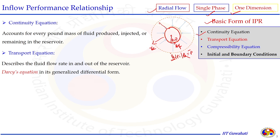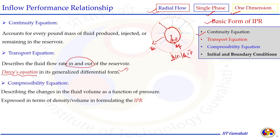The continuity equation is the mass conservation equation — we account for how much mass is going in, how much is going out, and how much remains within the control volume. Second is the transport equation that describes the fluid flow rate in and out of the reservoir, done with the help of the Darcy equation in its radial form. The properties of the fluid — oil, gas, and water — are included in the general IPR balance equation in the form of the compressibility equation.